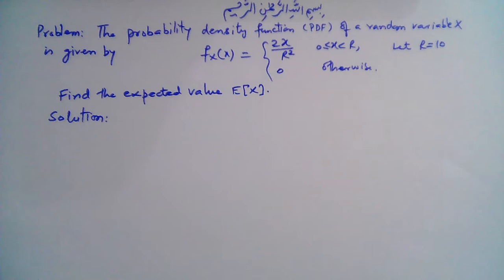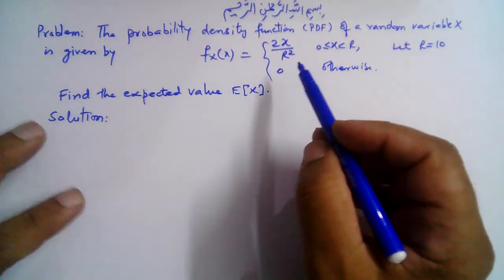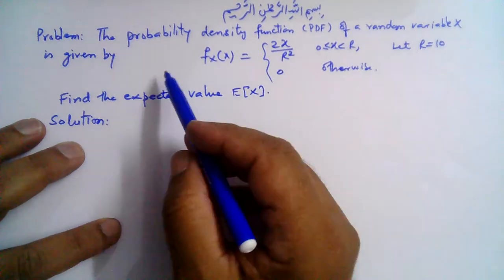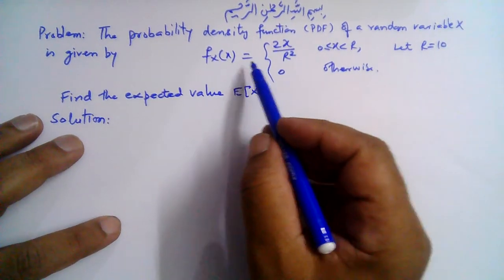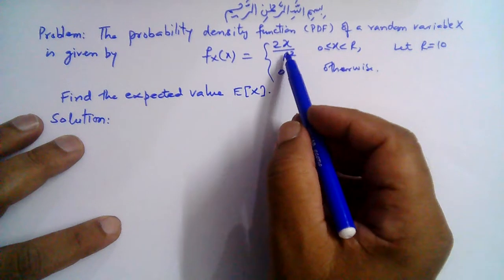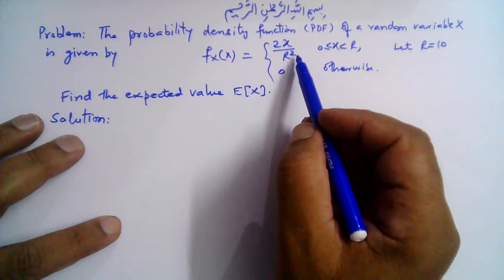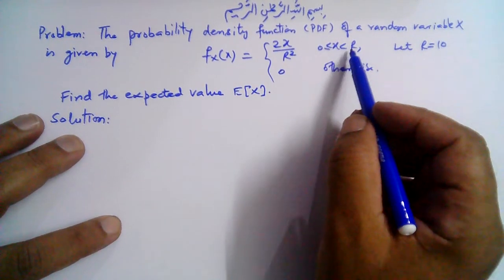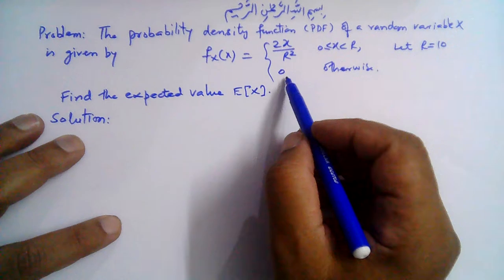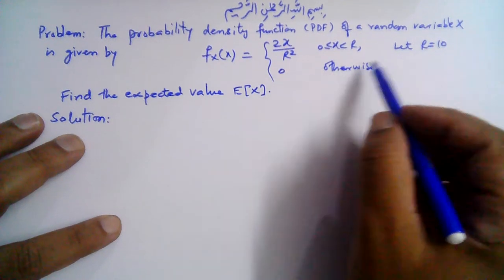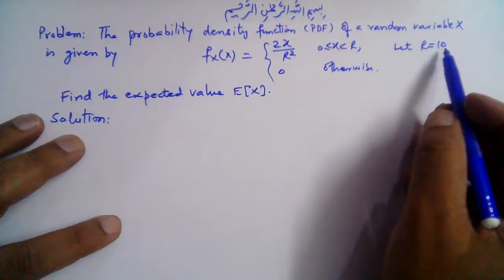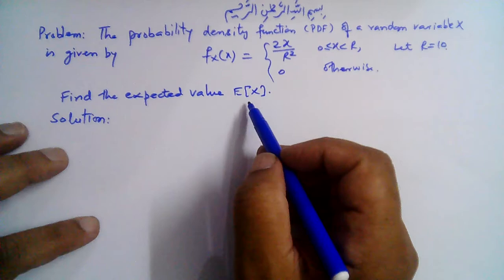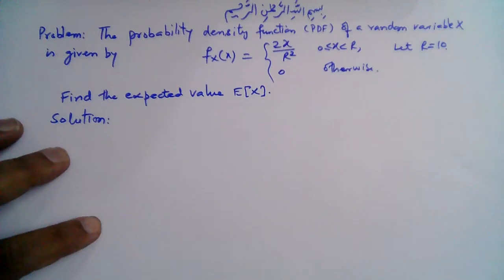Bismillahirrahmanirrahim. The probability density function (PDF) of a random variable x is given by f(x) = 2x over r squared, for x greater than or equal to 0 and less than r, and 0 otherwise. Let r equal 10. Find the expected value of x.